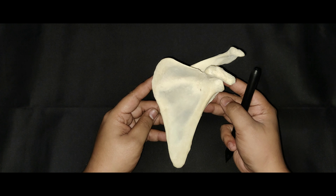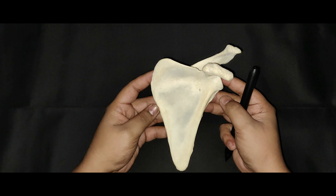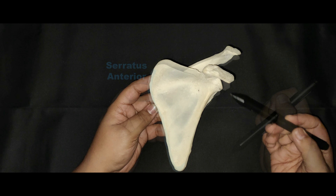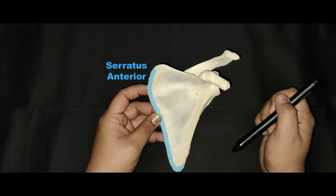The serratus anterior muscle is inserted on this very surface along the medial border and the inferior angle.